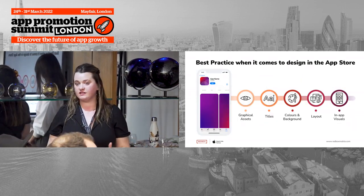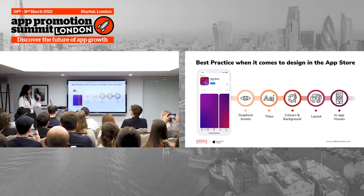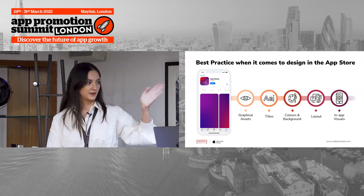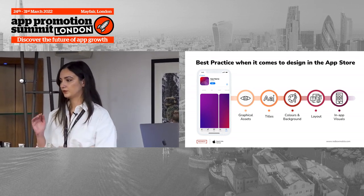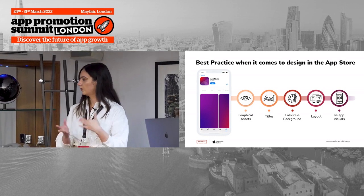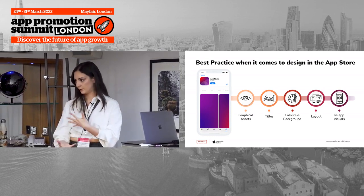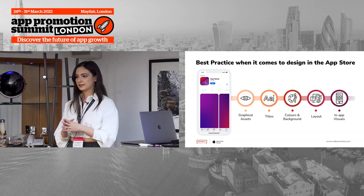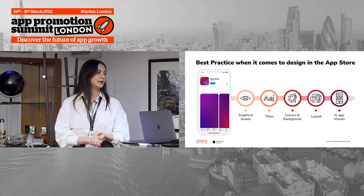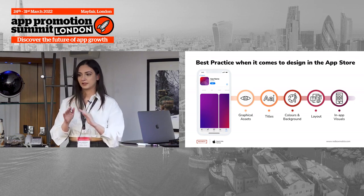Now moving to best practices for design in the App Store. Everything I'm going to talk about applies not just to CPPs — it can also be applied to your PPOs, and learnings from PPO can be taken into CPPs, so they're all interlinked. Looking at the specific components that make up a screenshot: first are the graphical assets — 2D or 3D elements, icons, illustrations. These are really important for communicating your branding, because you want to tell your story through your product page. If you have very plain or non-eye-catching elements, you won't stand out from the competition.